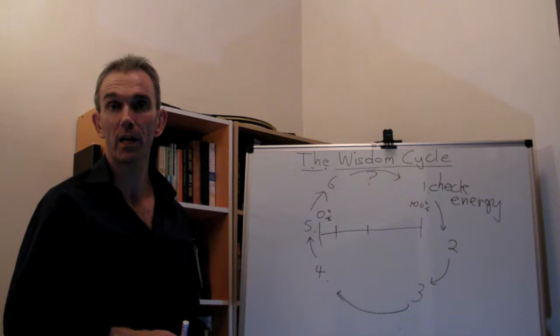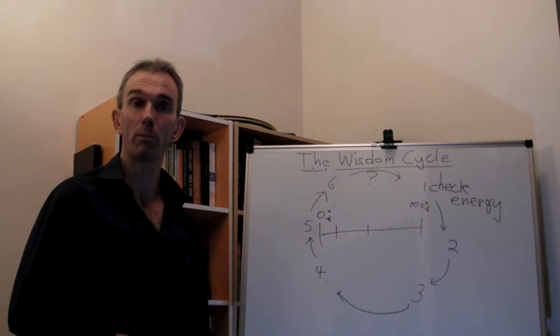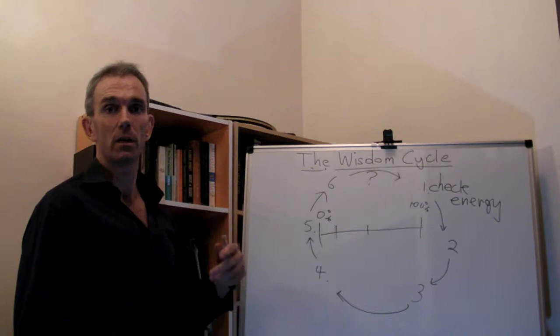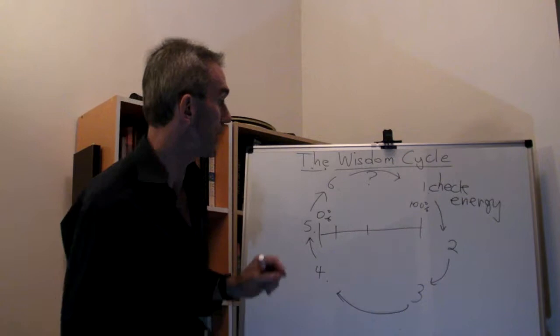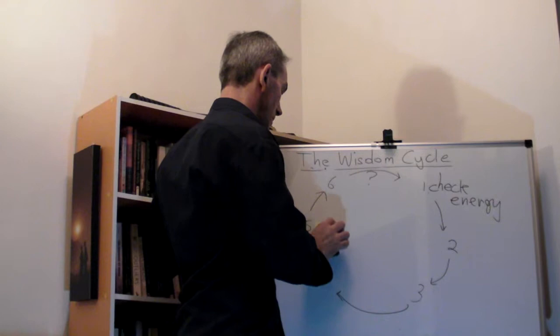And let's say theoretically I've got a high reading, say up 80%, that would be an excellent reading. That would mean that that decision, that action, is aligned with my spirit. So for the sake of demonstrating this particular process, the wisdom cycle, let's imagine in this case I've gotten a high reading.